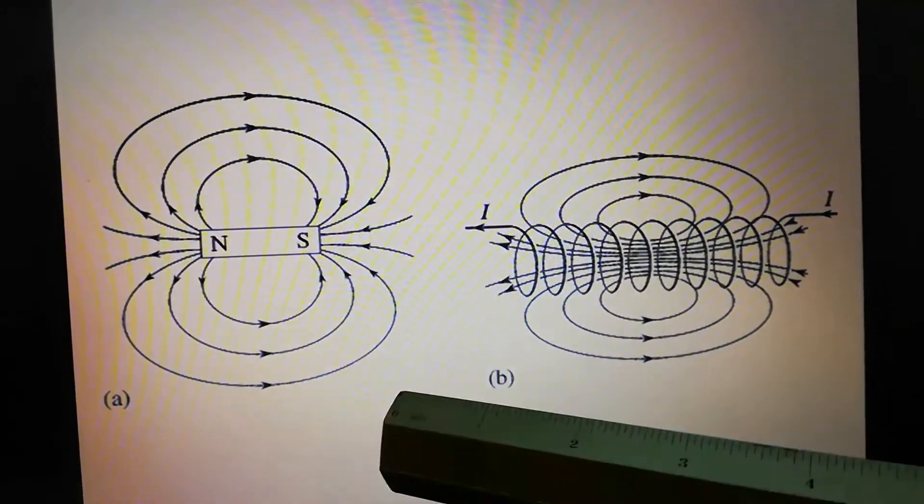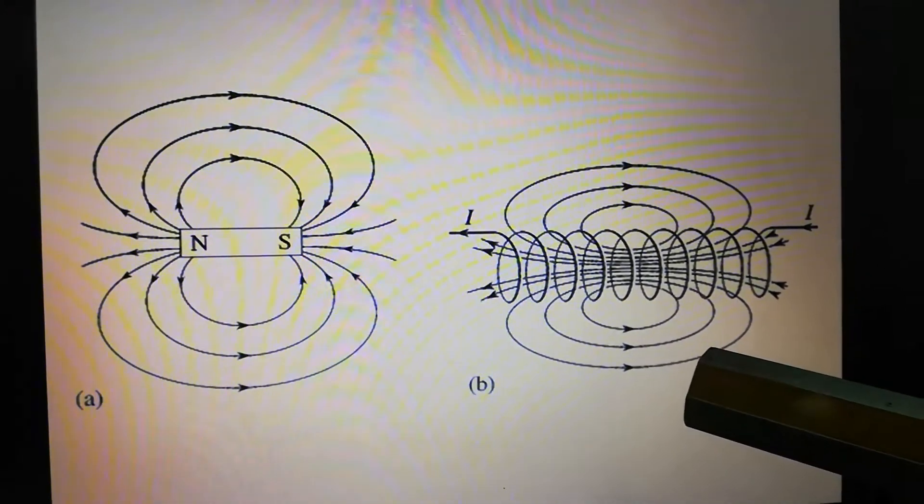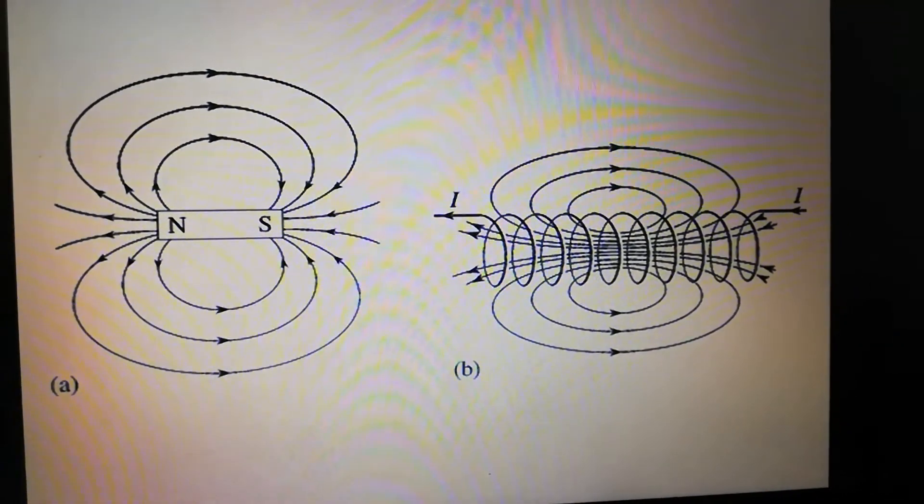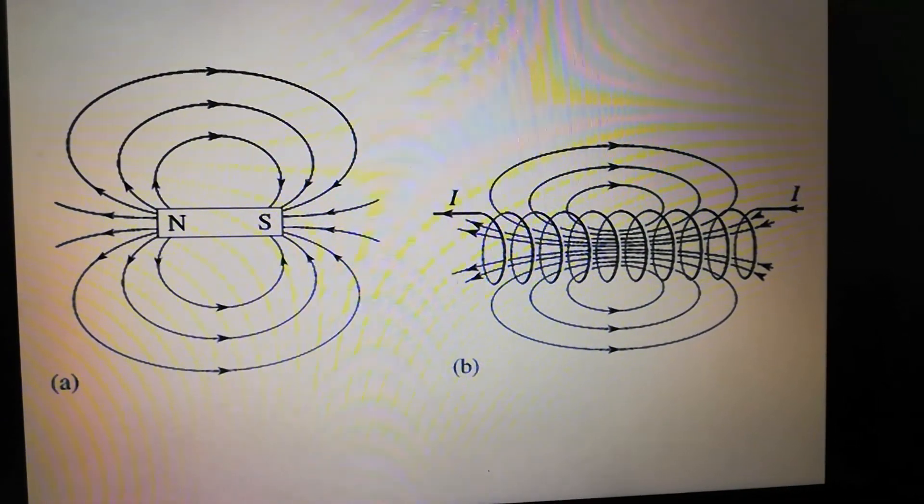See the picture. This is a bar magnet and this is a current carrying coil. The direction of the magnetic field in a current carrying coil is the same as that of the magnetic field in a bar magnet.